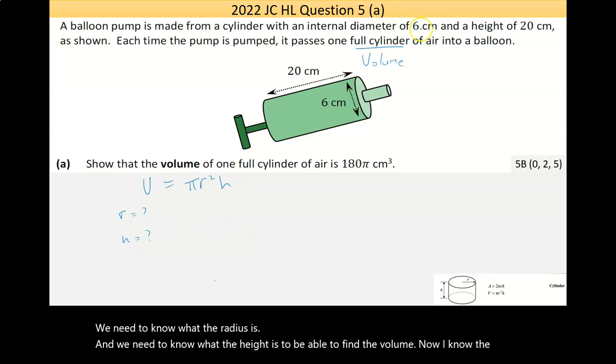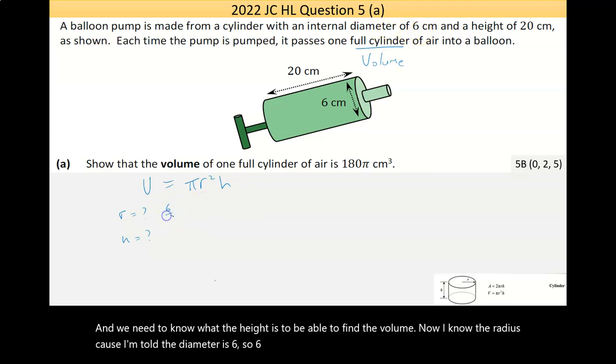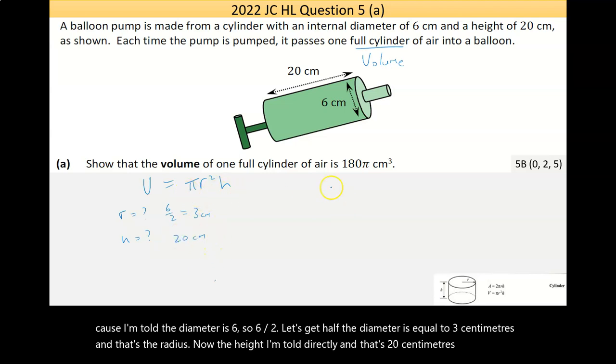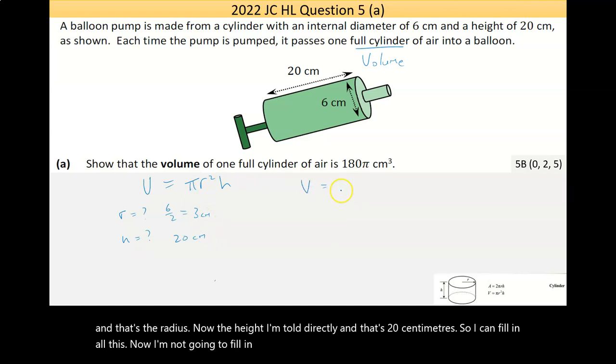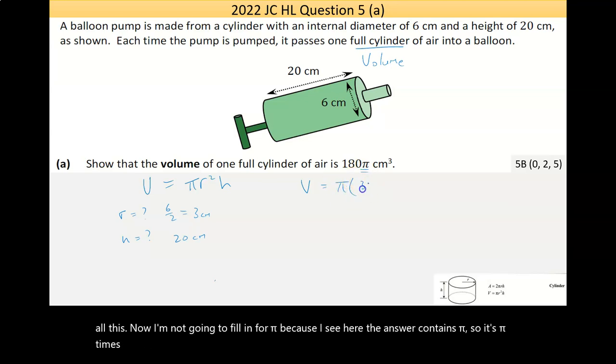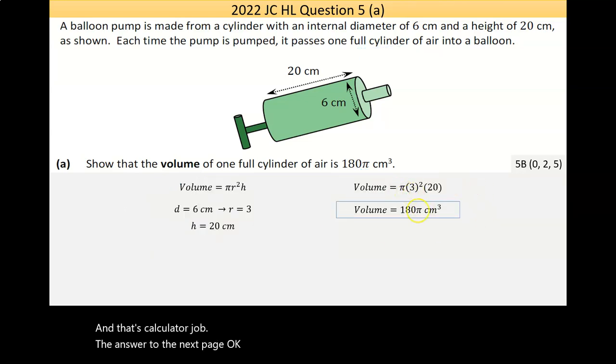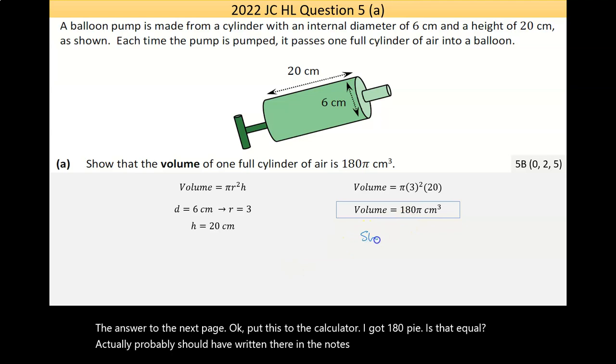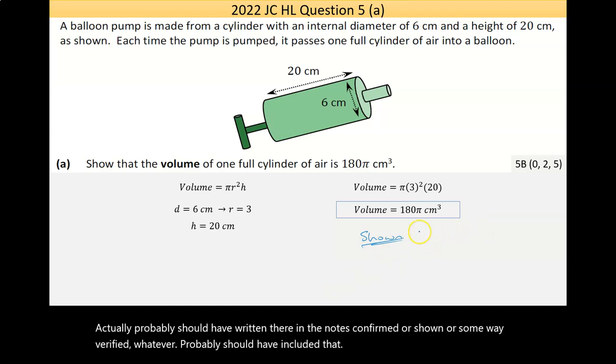I know the radius because I'm told the diameter is 6, so 6 divided by 2 is equal to 3 centimeters, that's the radius. The height is 20 centimeters. I can fill in all this. I'm not going to fill in for pi because the answer contains pi. So it's pi times 3 squared times 20. Put that to the calculator, I got 180 pi. I probably should have written in the notes confirmed or shown or verified. That's part A.